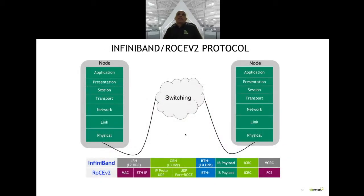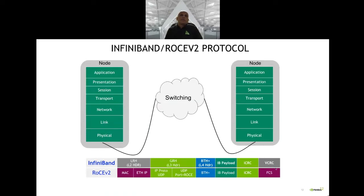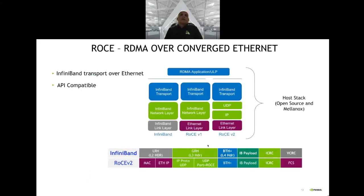This layer-7 stack compares InfiniBand and RoCE. Only the lower layers differ — from L4 onwards they are identical. One can use either RoCE Ethernet or InfiniBand and reconfigure the NICs, though the switches must be different between the two network types. The expanded version of this picture shows the stack going through RDP in version 2 and the InfiniBand network layer in version 1.